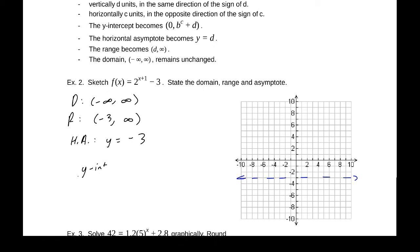Now our y-intercept, if we evaluate this at zero, will be 2^(0+1) - 3. So our y-intercept is minus one, so it is zero, minus one. Now our growth factor is two.